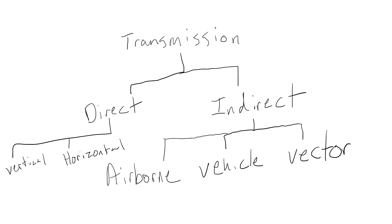To summarize, there are two main routes of transmission: direct and indirect. Direct transmission generally involves person-to-person contact, while indirect transmission occurs when an object or organism serves as the mode of transmission from one person to another.